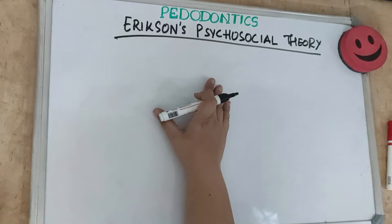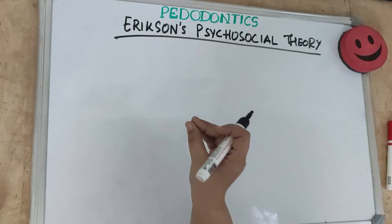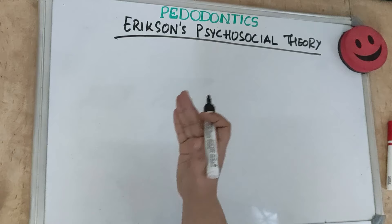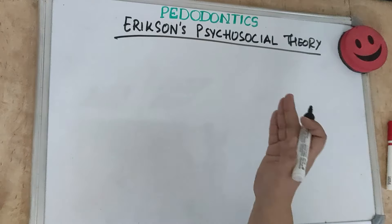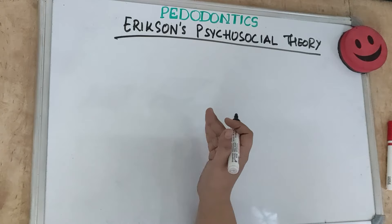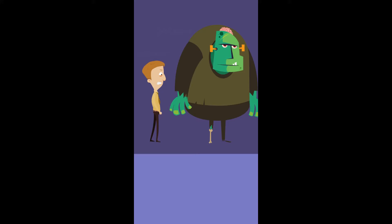Hello friends, Dr. Sangeeta with you for another lecture on child psychology. Today's topic is Erikson's psychosocial theory. In the previous video we covered one more psychodynamic theory, which was Freud's psychosexual theory. Freud focused more on basic needs and biological forces — the sexual forces. Erikson, on the other hand, was a follower and fan of Freud, and along with Freud's daughter he came up with the psychosocial theory, which focuses on the environmental factors that were missing in Freud's theory.